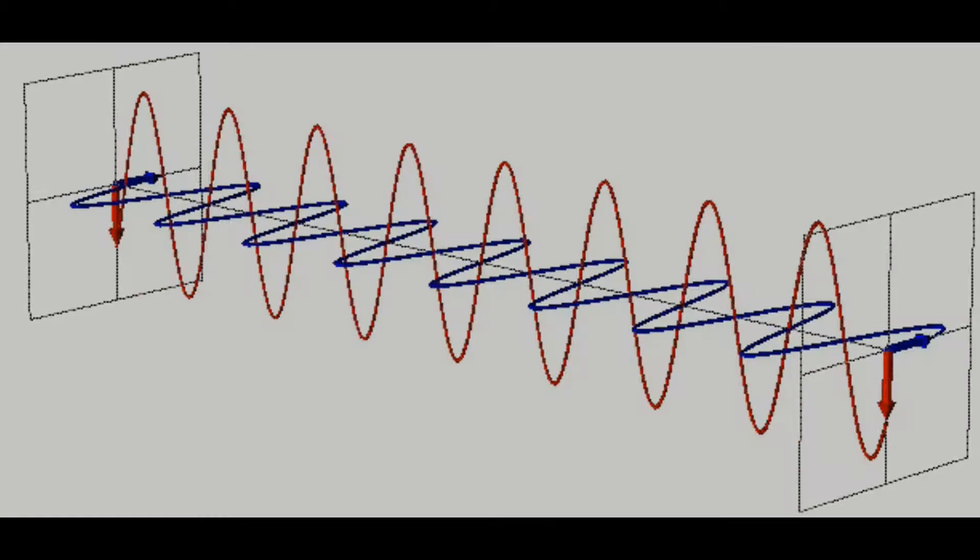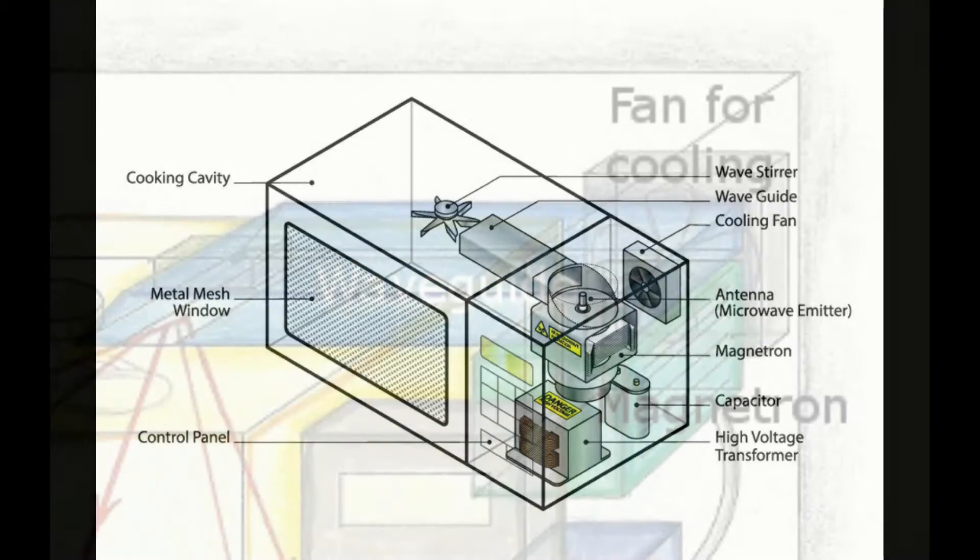The microwaves are directed to the location of food through a waveguide to the oven cavity, and then the waves are scattered with a small metallic fan called the stirrer.